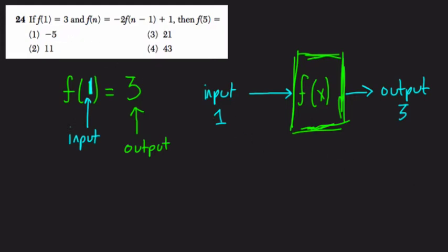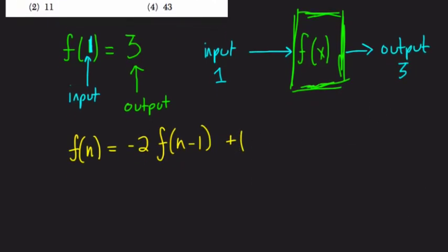So let's go further. It says f of n equals negative 2 times f of n minus 1 plus 1. Okay. That's pretty intimidating. That intimidation's pretty heavy right there. But let's break it apart.